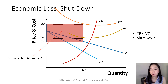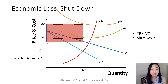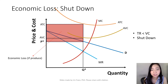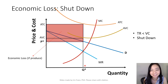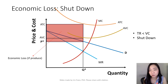Here is a situation where your firm should shut down and not produce because the price is too low. Given that price is at P star and quantity at Q star, your total revenue equals P star times Q star. Your variable cost equals average variable cost times quantity, and given quantity Q star, your average variable cost is higher — so your variable cost exceeds your total revenue. Therefore, your firm should shut down.